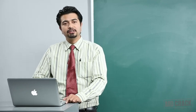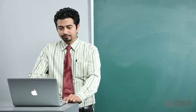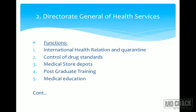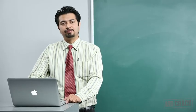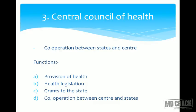The DGHS (Directorate General of Health Services) functions include: International Health Relations and Quarantine, Control of Drug Standards, Medical Store Depots, Postgraduate Training, Medical Education, Medical Research, Central Government Health Schemes, National Health Programs, Central Health Investigation Bureau, Health Intelligence, and National Medical Library. The Central Council of Health works for cooperation between states and the centre, with functions including: provision of health, health legislation, grants to states, and cooperation between centre and states.